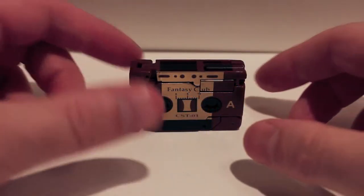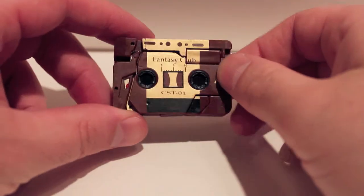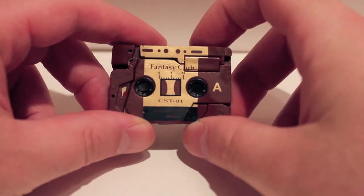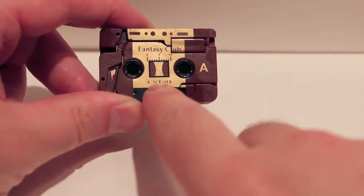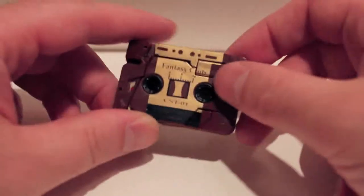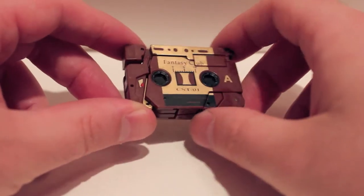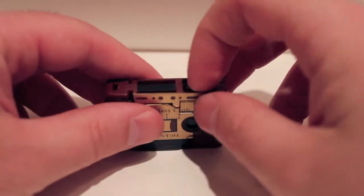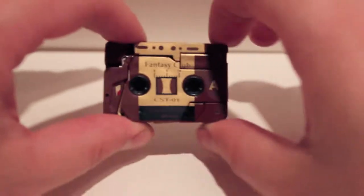Alright guys, got another video review for you. We're taking a look at Keith's Fantasy Club KFC, CST-01. This is their first release - I think they might have done the evil versions first - but this is Rhino, aka Ramhorn, who was a cassette for Blaster.